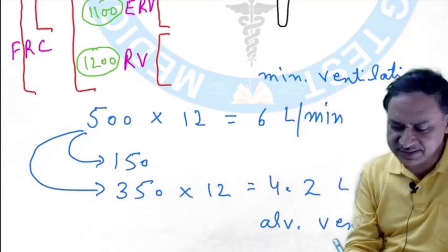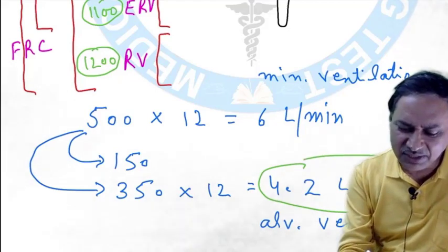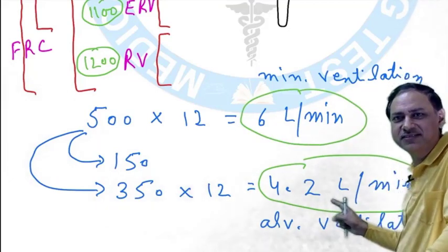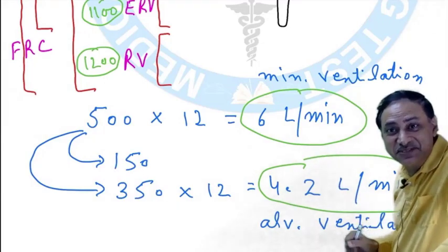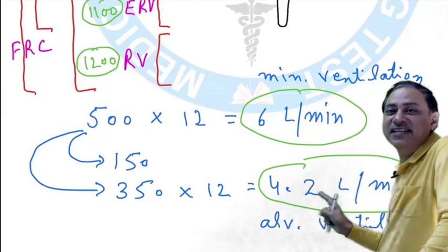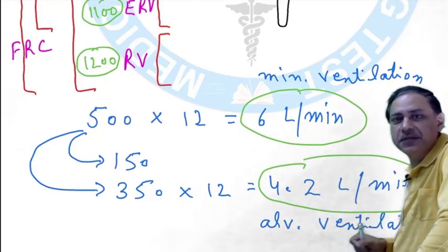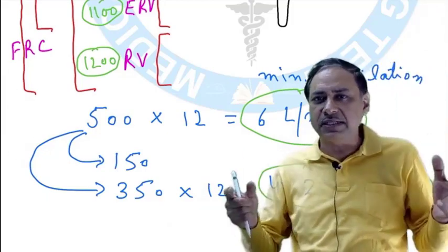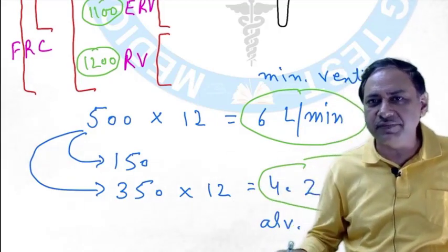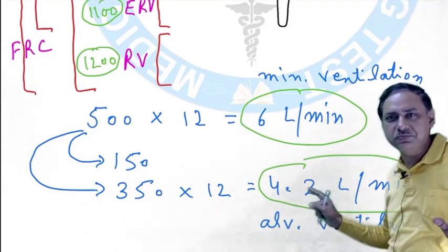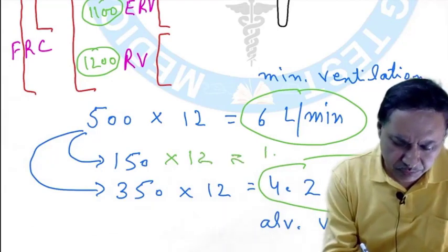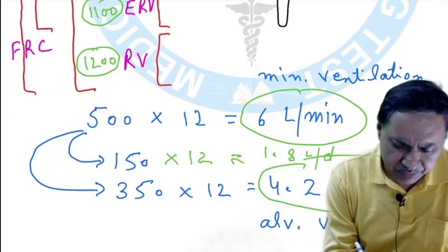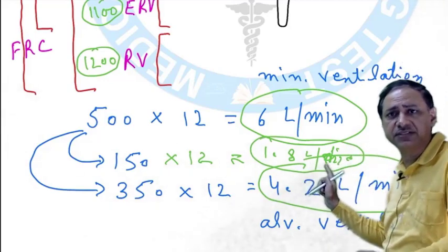I am actually interested in Alveolar Ventilation, not the Minute Ventilation value. Think of it this way: 6 L/min is my total salary, 4.2 L/min is my net salary after 30% TDS is cut. This is my net salary going up to the area where gas exchange takes place. 150 mL × 12 = 1.8 L per minute is dead space ventilation — this is useless.